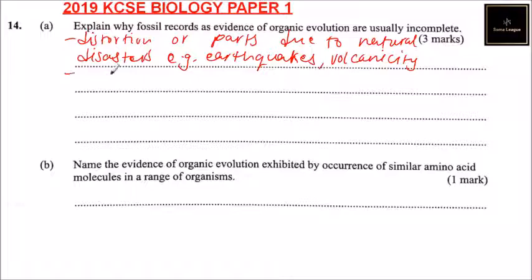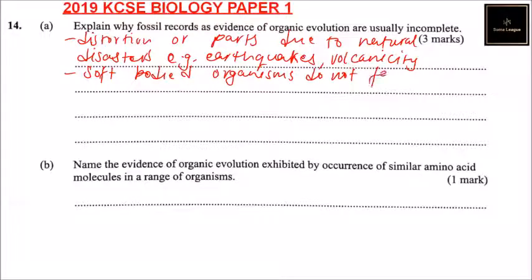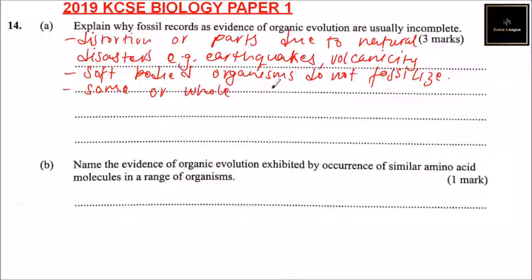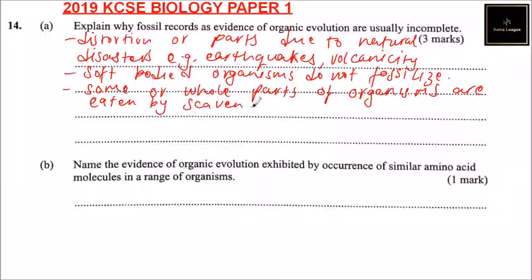Another reason is that soft-bodied organisms do not fossilize. We can also say some or whole parts of organisms are eaten by scavengers, and therefore you cannot be able to get their fossil or their remains.